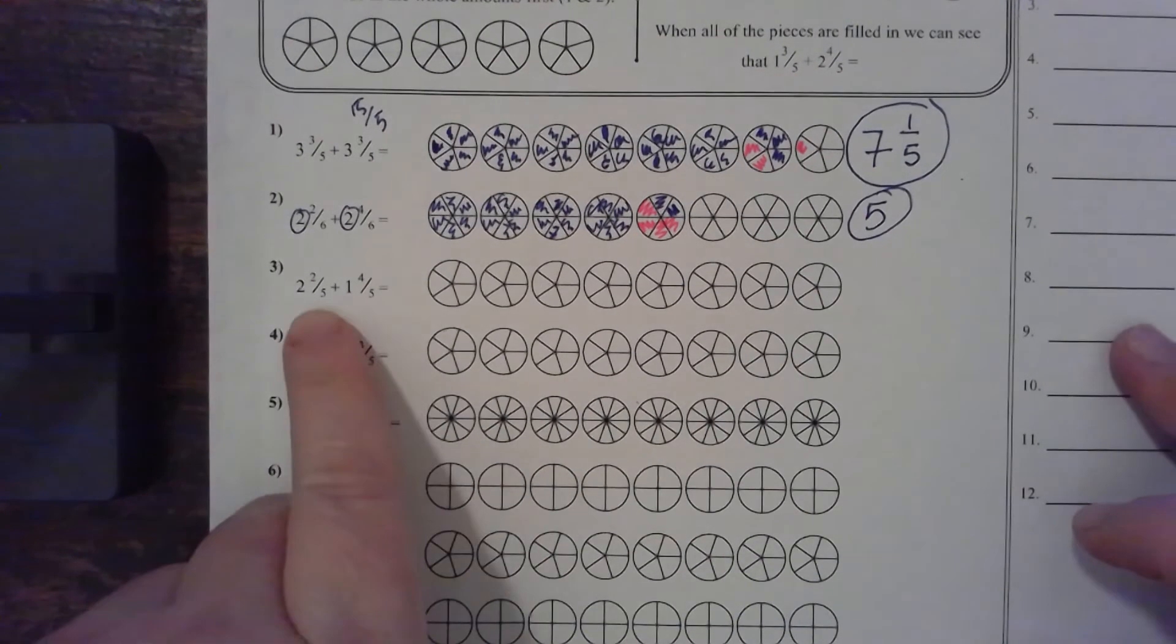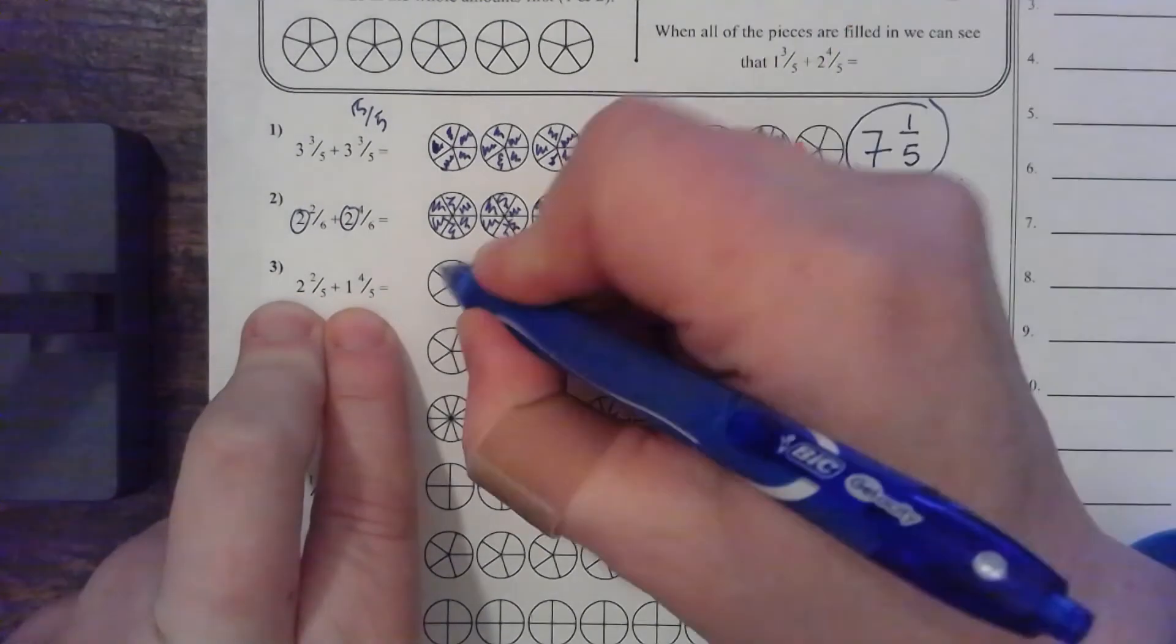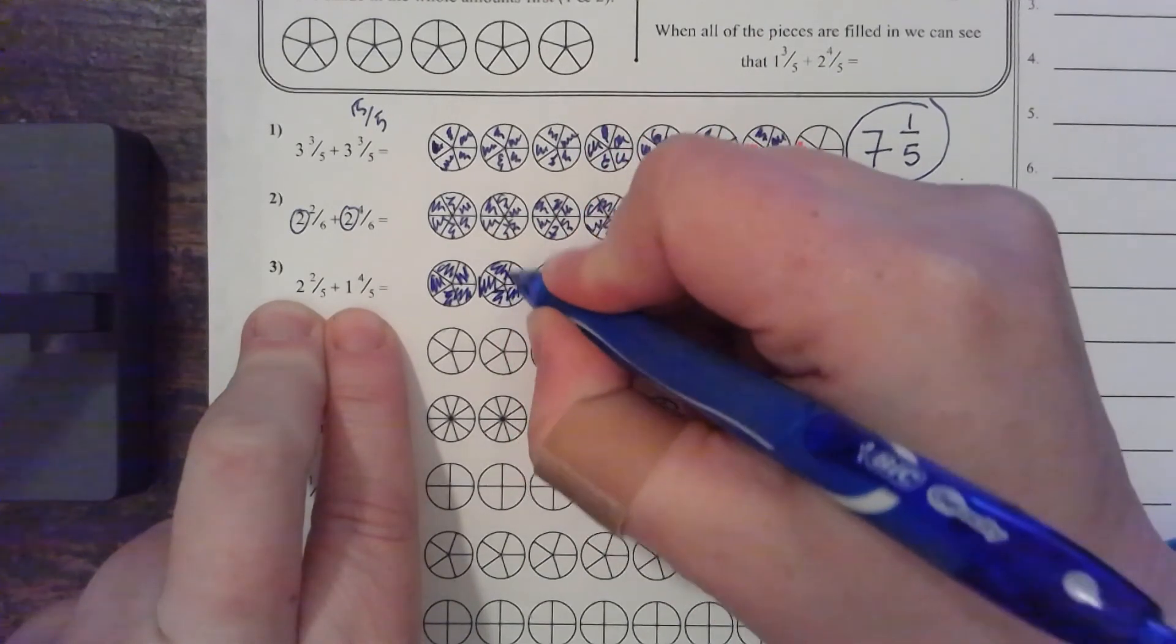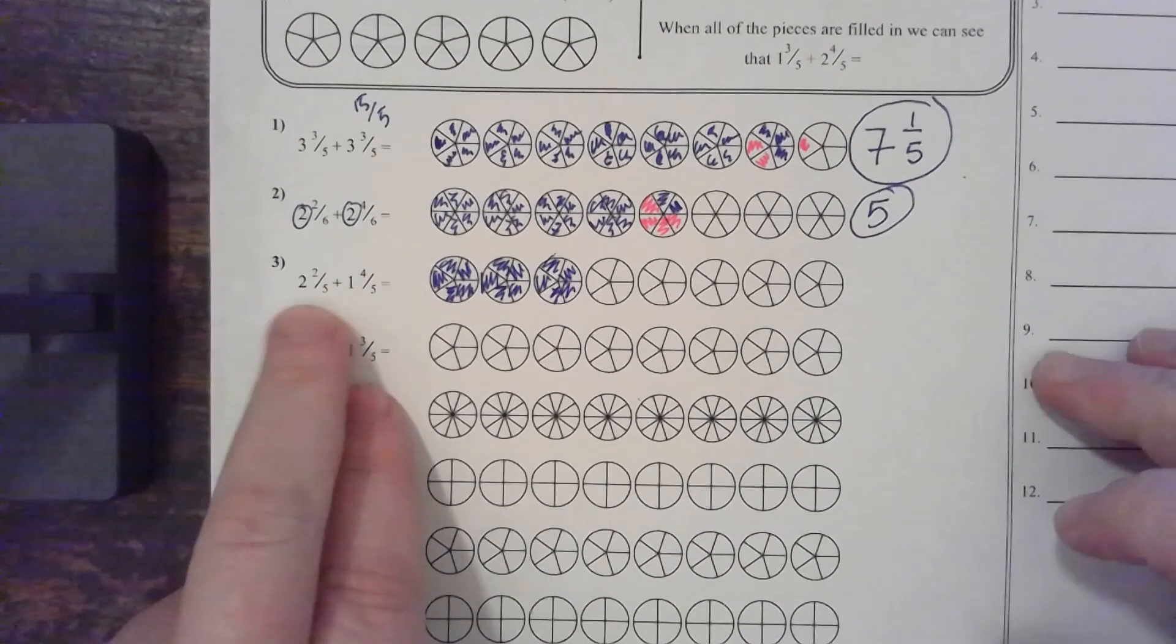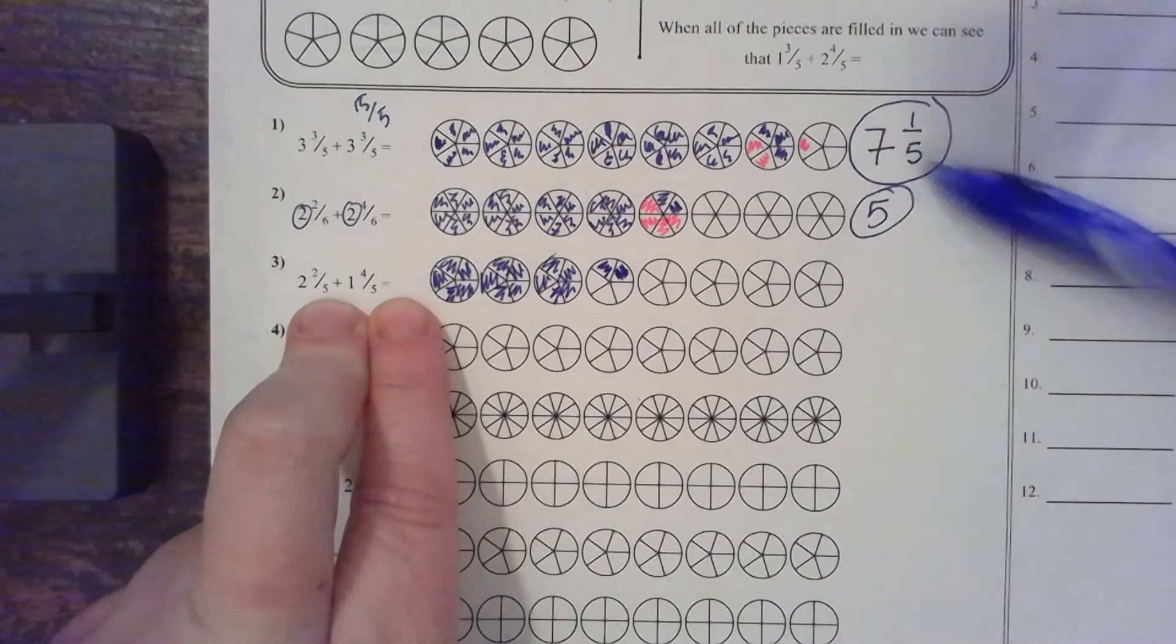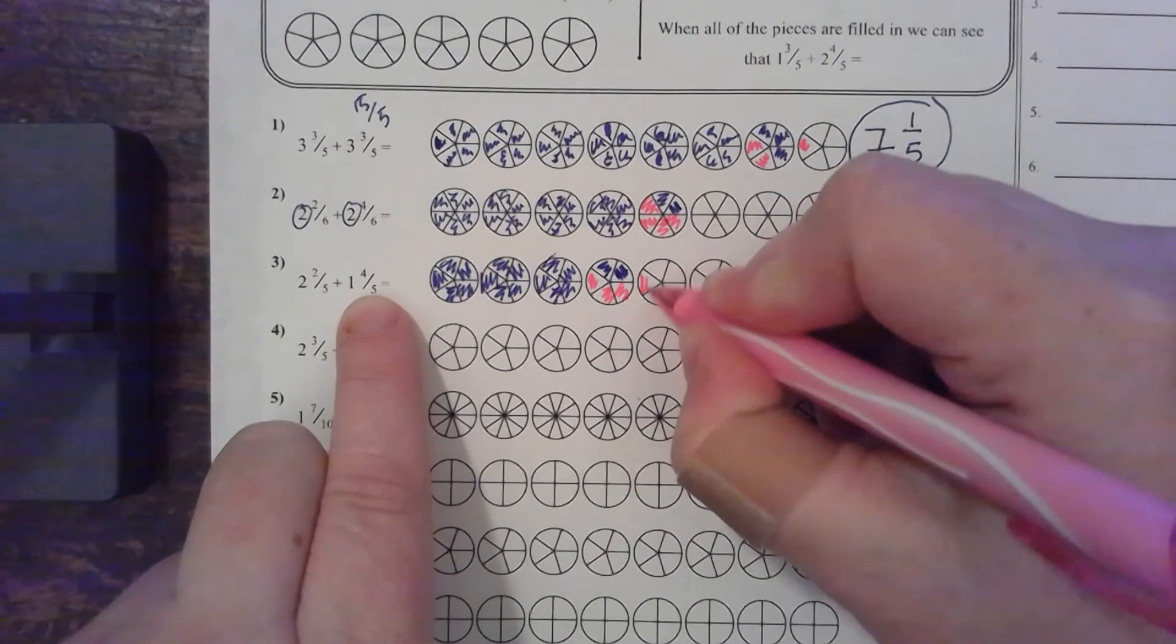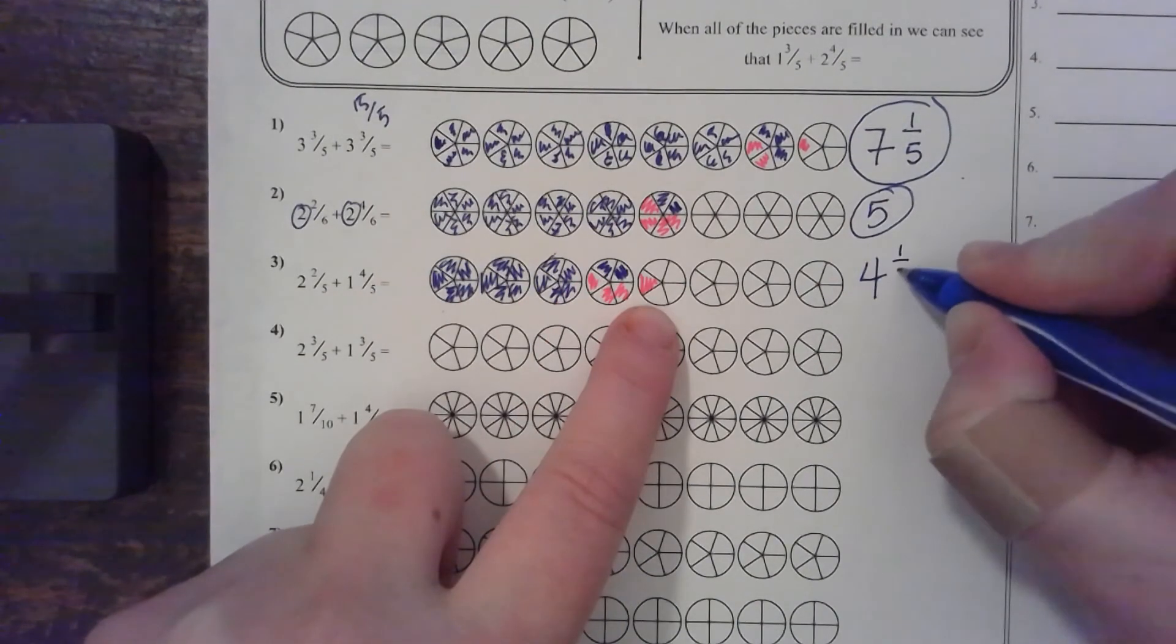All right. This is two and two-fifths plus one and four-fifths. Now, we already have common denominators. So, all we have to worry about right now is two plus one. Two plus one is three. So, I have three. So, I got my whole numbers out of the way. Now, I have two-fifths plus four-fifths. So, I'm going to come right here and color in two-fifths. I'm going to take my other color and color in four-fifths. One, two, three, four. So, my answer is one, two, three, four, and one-fifth.